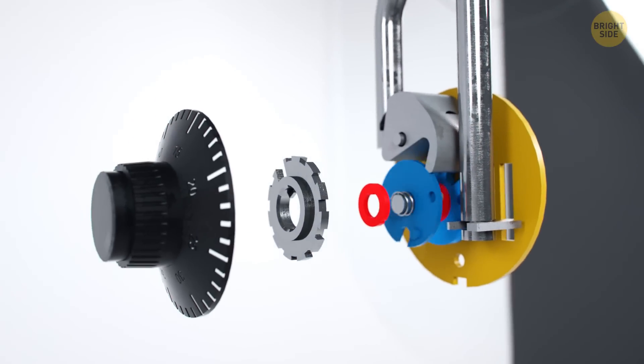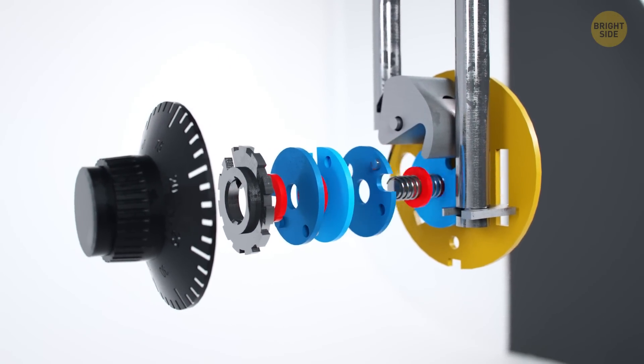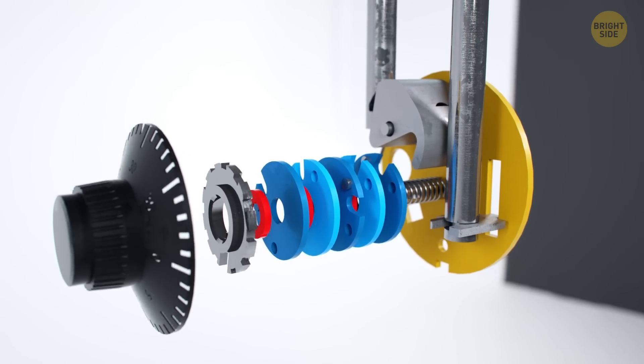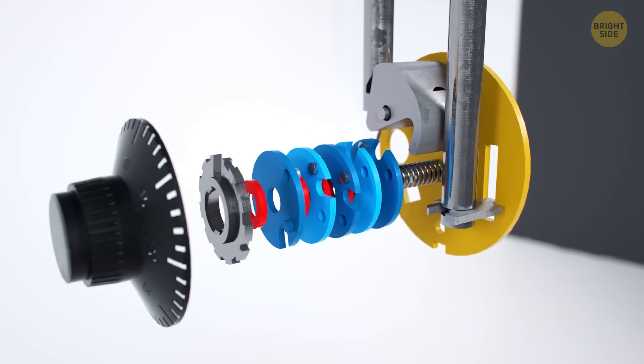Sometimes manufacturers make more than 3 discs. For example, there can be 6 of them. Now you have to line up 6 discs to turn the lock. It will increase the size of the lock but will make it more secure.